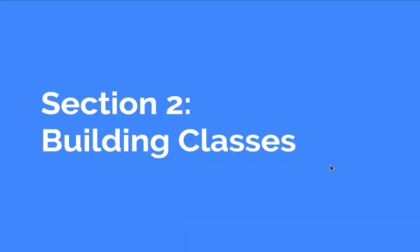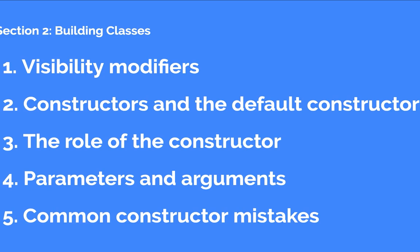Welcome back. In this section, we are going to be learning about how to build classes in Java. We're going to be introducing every topic in Section 2. Number one: visibility modifiers — what are they and why are they important? Next: constructors, which allow you to build objects from classes — including the default constructor and its role and functionality. Then: parameters and arguments — defining those and how to use them. Number five: common constructor questions and mistakes — common hiccups that beginners get into and how to avoid them. Next: assignment operators and assignment statements.